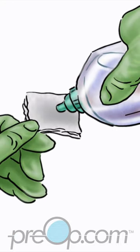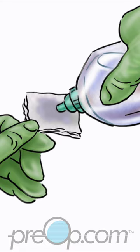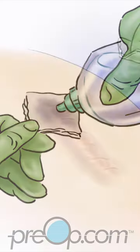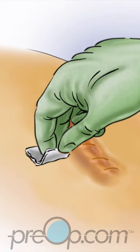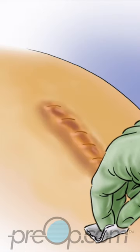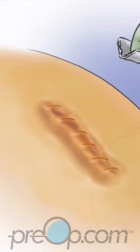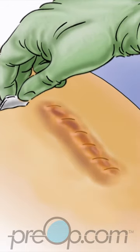To rinse the wound, wet a new gauze or clean cloth with plain water. Start at the incision and work away to remove any trace of soap, working top to bottom. Use a fresh gauze or cloth to dry the area without rubbing.